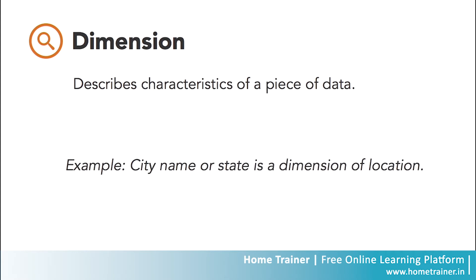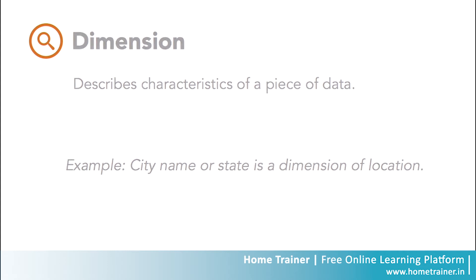Another example would be a geographic location having dimensions such as city names or state. You also have browser, exit page, screens, and sessions, which are all other examples of dimensions that appear by default in Google Analytics.